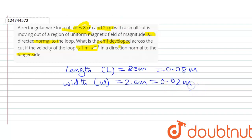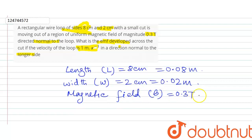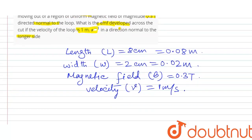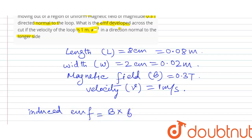So, the magnetic field B is equal to 0.3 tesla, and the velocity is equal to 1 meter per second. The induced EMF formula: EMF is equal to B into velocity v into length L. So the induced EMF is BvL.